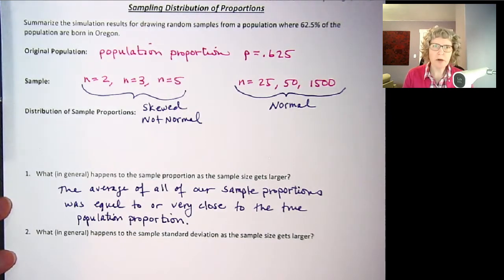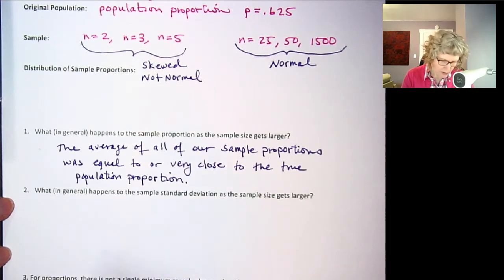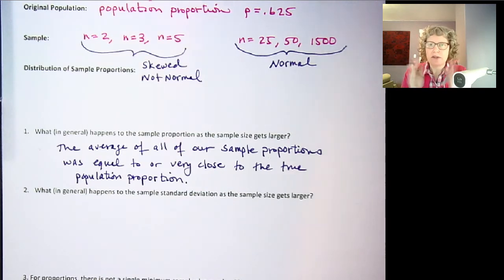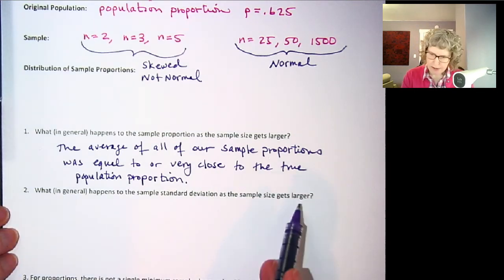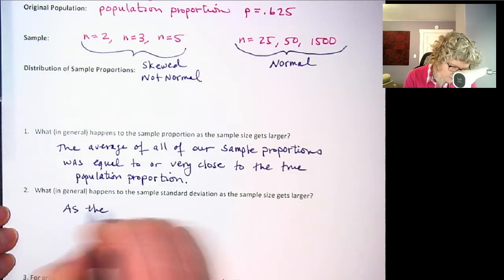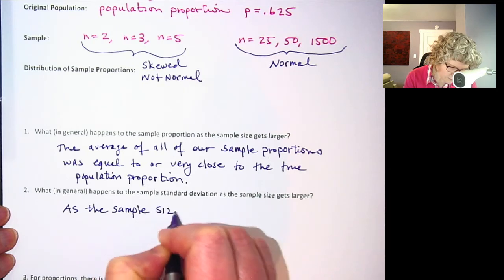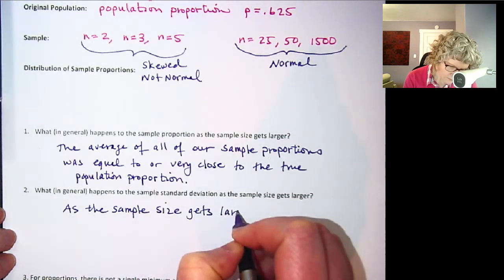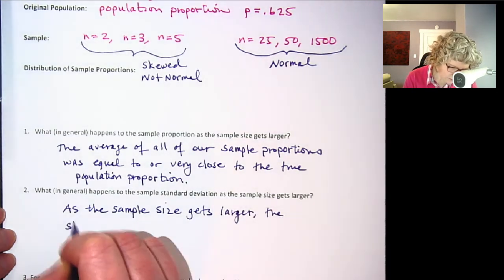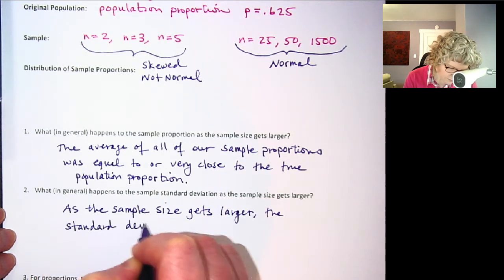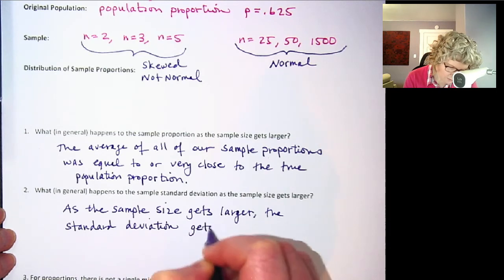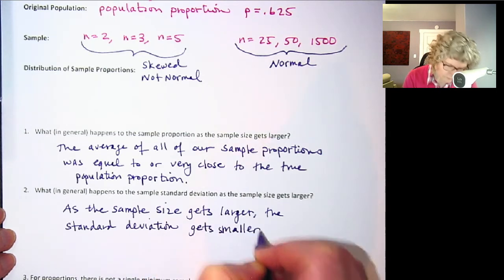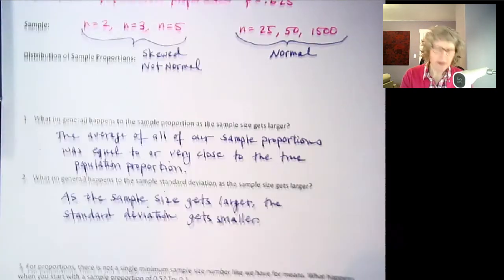And then what in general happens to the sample standard deviation as the sample size gets larger? Now this particular app didn't show us the number for the standard deviation but we could see that the scale was narrowing in. We were getting a narrower and narrower distribution. So as the sample size gets larger the standard deviation gets smaller, okay so we will have a formula for that so we can actually do our calculations.